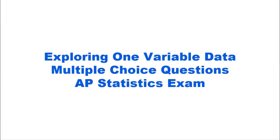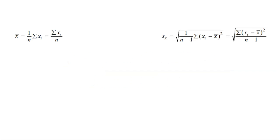Before we start examining some multiple choice questions out of exploring one variable data, let's take a look at two formulas on the formula sheet that you possibly might need for questions in this section. The first on the left is the formula for the mean, and on the right is the formula for the standard deviation of a sample. Honestly, you're probably never going to need these formulas — your calculator can do all of this for you. Just enter your data into a list, run a one variable stats for that list, and you'll get the mean and standard deviation very easily.